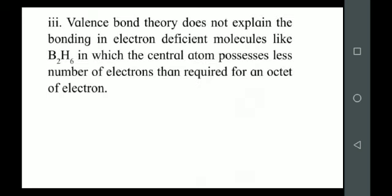Another limitation is that valence bond theory cannot explain the stability of molecules where the central atom has fewer than eight electrons — that is, molecules with an incomplete octet. So these are the limitations mentioned here. I hope you all have understood valence bond theory, which included hybridization — specifically sp³, sp², and sp hybridization. Other kinds of hybridization are also possible but are not mentioned in the syllabus. I hope you all have understood. Allah hafiz.